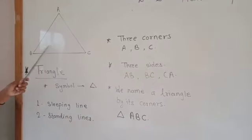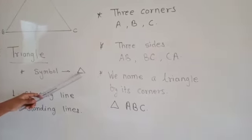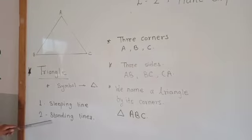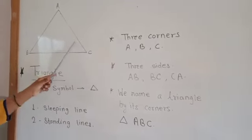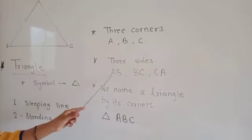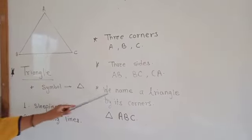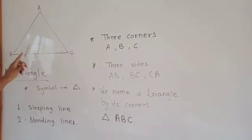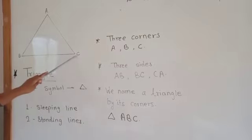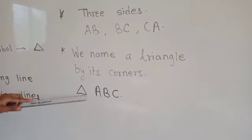Now we will learn in detail about the plane shapes. The first shape is a triangle. The symbol for triangle is a small triangle written in front of the name. A triangle is made by one slipping line and two slanting lines. There are three corners: Corner A, B, and C. There are three sides: AB, BC, and CA. We name a triangle by its corners — we can read it as Triangle A, B, C, and we write it as the triangle symbol followed by ABC.